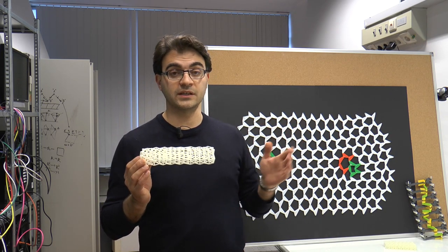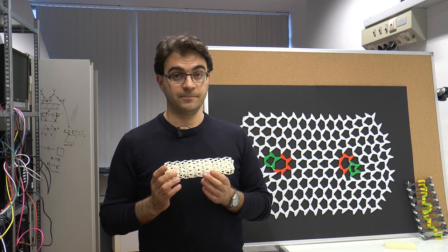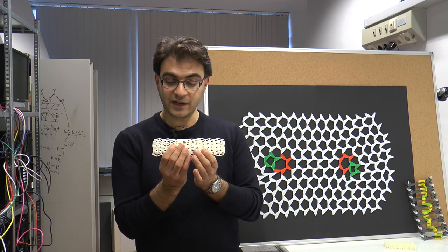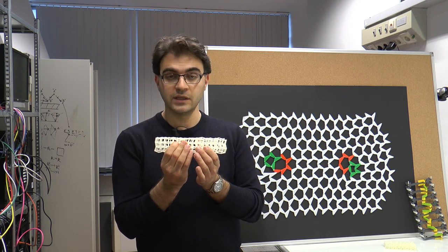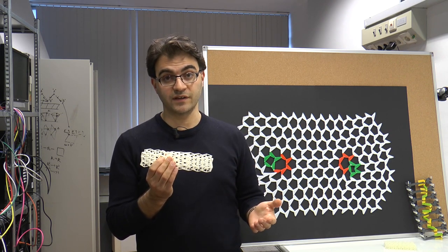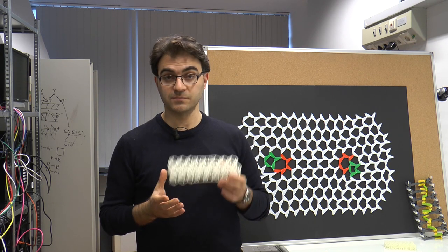They have domain walls along which you can localize states of self-stress. When you compress such a structure, it will preferentially fail or buckle along the lines where the states of self-stress are localized. This allows us to control the way this material fails.